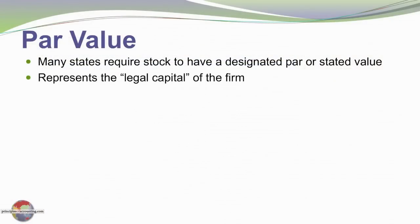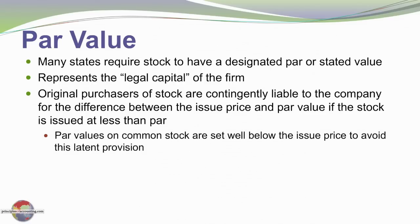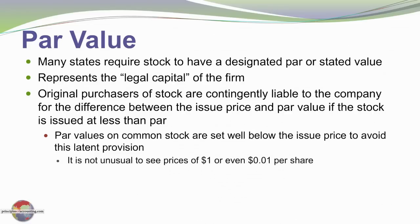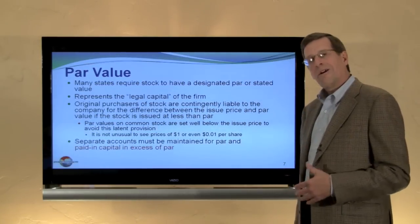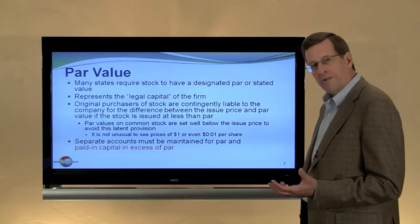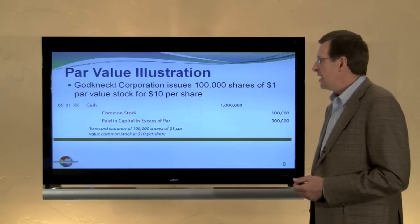Par value represents the legal capital of the firm. There is some historic precedent for this, although it is long since lost in history. Original purchasers of stock are contingently liable to the company if they buy stock below par value — that is, the company can later call for additional capital contributions. As a result, most companies when they issue stock will issue at a price far above par value, which negates any concern about an additional call on shareholders. It's usually stated as a nominal price — you might see a $1 or even a 1 cent par value. As a practical matter, par value is not critically important, but it does trigger accounting significance. We record common stock at its par value, and any issue price in excess of par value is recorded to a paid-in capital in excess of par value account.